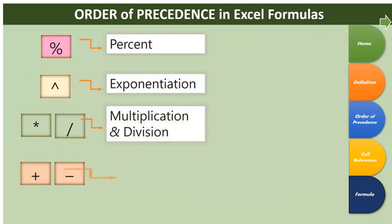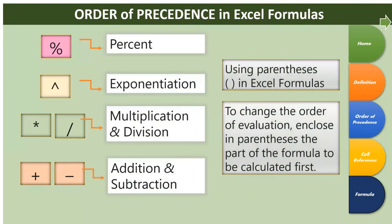The order of precedence describes how Microsoft Excel interprets the formula we create. First is parentheses, second is exponentiation, third — with equal priority — is multiplication and division, and fourth — also with equal priority — is addition and subtraction. If there is a parenthesis in a formula, we must perform the operation enclosed in parentheses first.